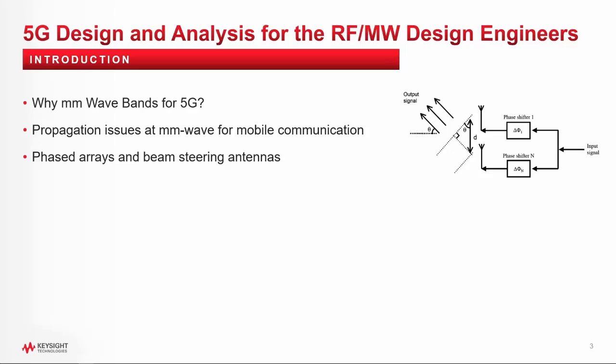Research has shown that these propagation issues can be addressed and overcome if we use phased arrays and beam-steering antennas. A phased array antenna is basically composed of multiple radiating elements. Each element is connected to a phase shifter, which forms the beam spectrum that steers the antenna. So now with these phased array antennas, we can enter the millimeter wave spectrum and achieve the high bandwidth and high speeds that 5G promises.